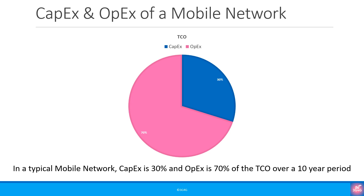At a very high level, in a typical mobile network, the CapEx is 30% of the total cost while OpEx is 70% of the TCO. This can vary widely depending on what arrangements the operator has. We will look at some details when we discuss RAN.